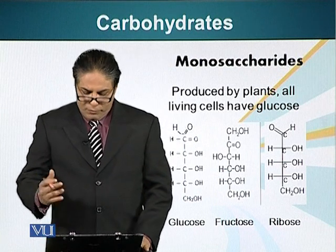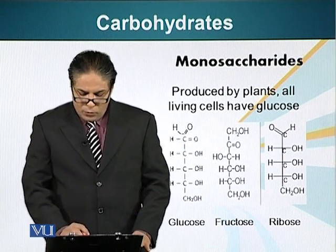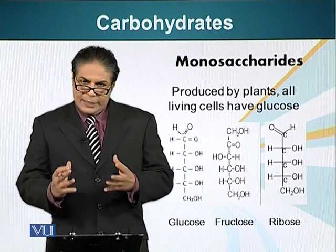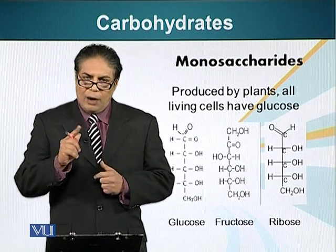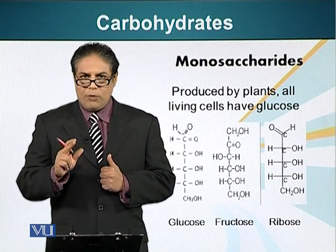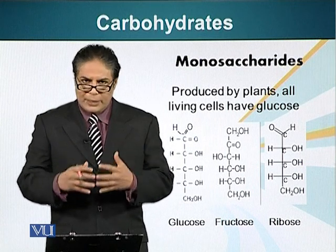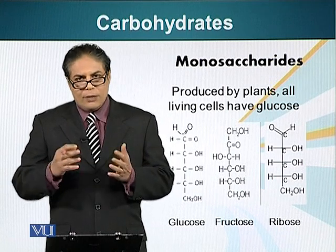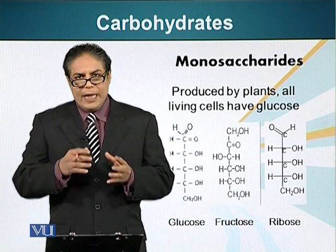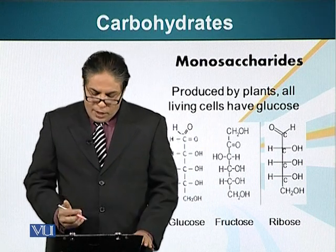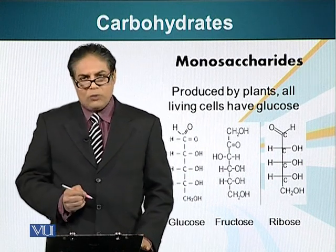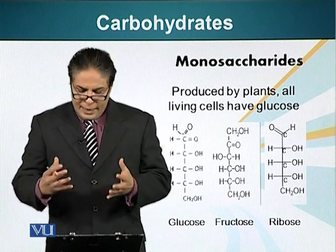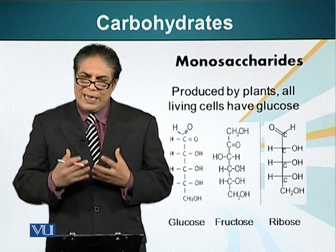The monosaccharides I am going to talk about are glucose, fructose, and ribose. The structures are on the screen. You will notice the basic formula of these carbohydrates is a carbon atom attached to a hydroxyl group and a hydrogen atom. For a monomer like glucose, fructose, and ribose, the formula is CH2O. These are the linear forms of these molecules; however, in the cell, these molecules can become circular and they exist predominantly in a circular form.